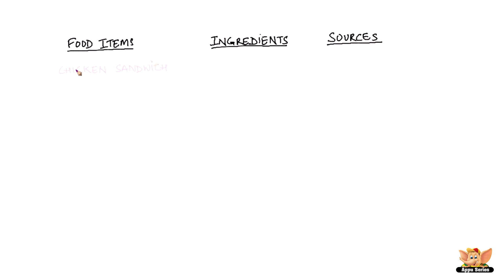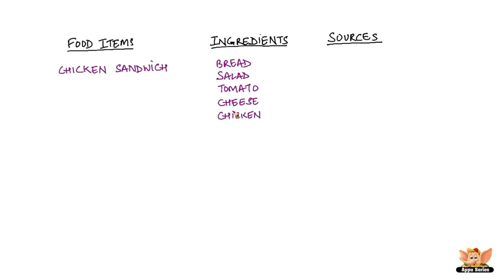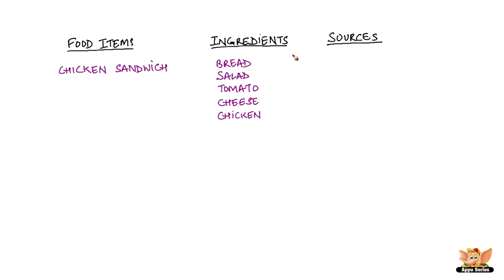Similarly, you take chicken sandwich. It's made with bread, salad, tomato, cheese and chicken. Here again, we have bread, salad and tomato sourced from plants, and cheese and chicken come from animals.